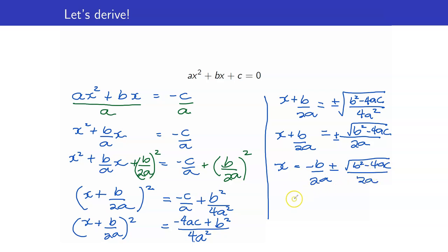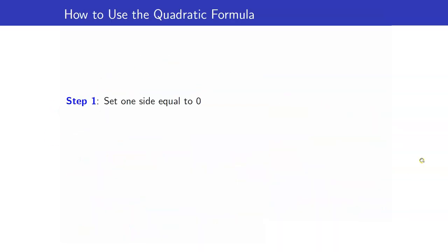Since we now have the same denominator, we get x equals negative b plus or minus the square root of b squared minus 4ac, all over 2a. And this is your quadratic formula. As you can see, now that we know the quadratic formula, there is no need for us to use completing the squares, because when we derived the quadratic formula, we just used completing the squares.